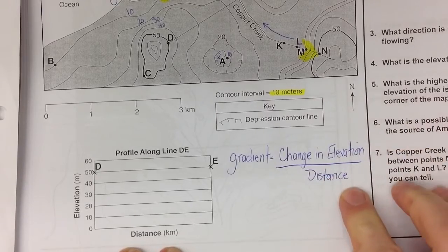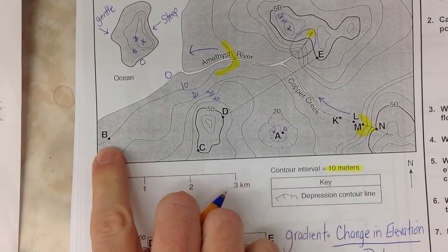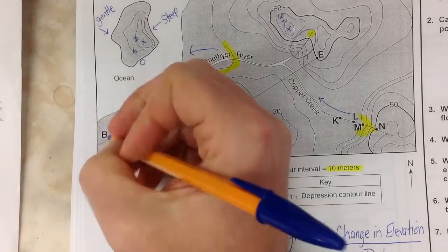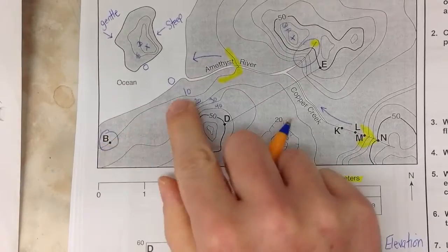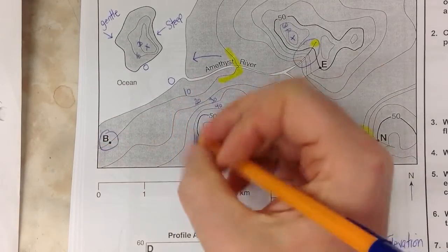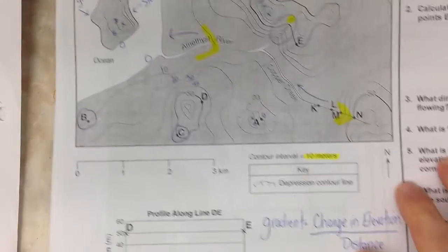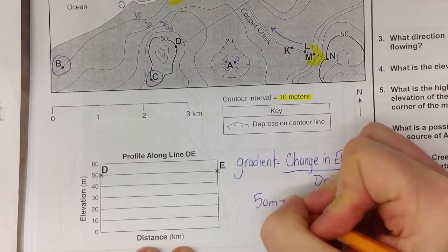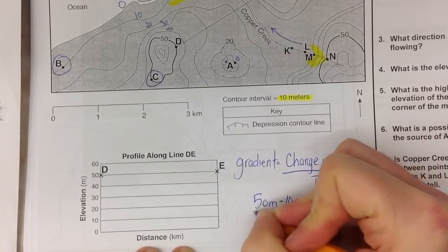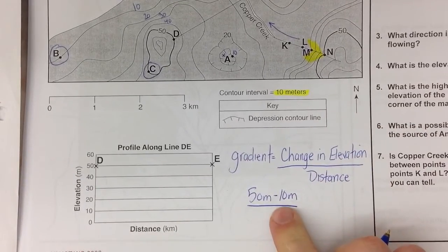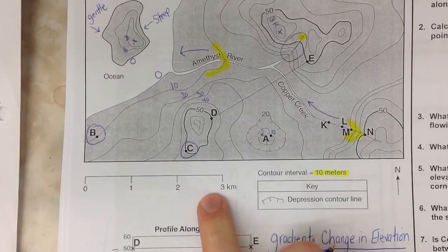So here's what we're going to do. We're going to do the gradient between points B and C. B is on your contour line of 10 meters. C is on the contour line of 50 meters. You just subtract them. 50 meters minus 10 meters divided by the linear distance between them. That's where the map scale is going to come in.